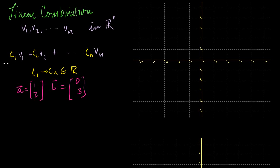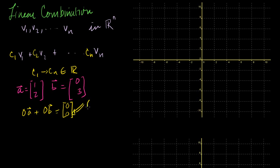Well, it could be any constant times a plus any constant times b. So it could be 0 times a plus 0 times b, which of course would be the zero vector — [0, 0]. That's a completely valid linear combination, and we denote the zero vector by a big bold 0.